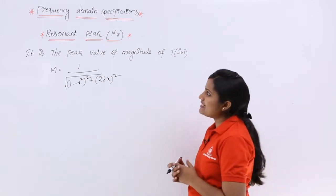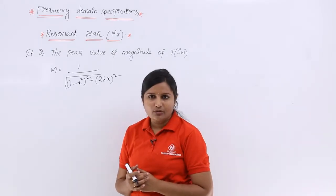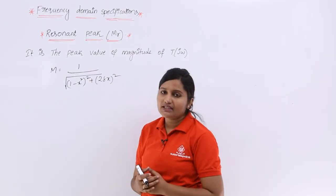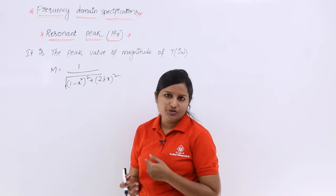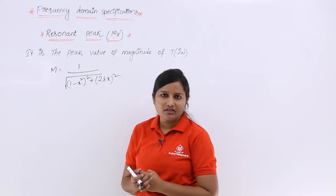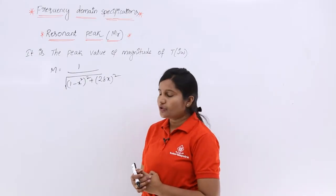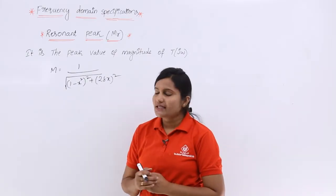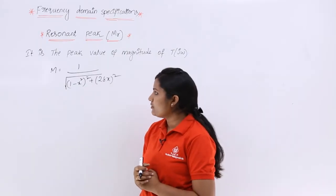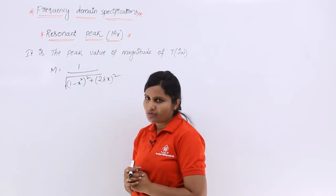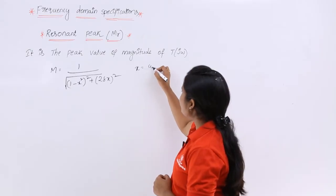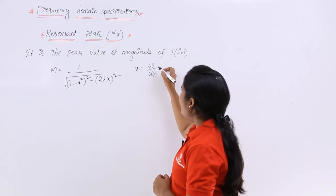In the first class of frequency domain specifications, we derived the equations for both magnitude and phase of the basic second order transfer function T of j omega. The magnitude is equal to 1 by root of (1 minus x squared) whole squared plus (2 zeta x) whole squared, where x is the ratio of frequencies omega by omega n.